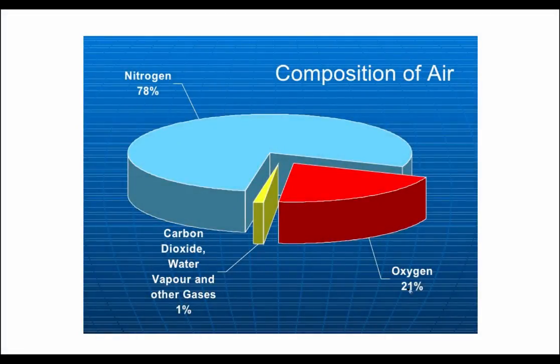So the way to understand this 4 to 1 ratio is that if there were four molecules of nitrogen, there would be one molecule of oxygen. If there were eight molecules of nitrogen, there would be two molecules of oxygen.